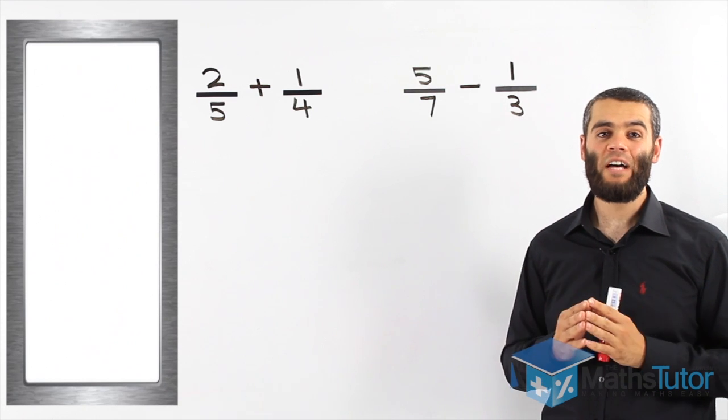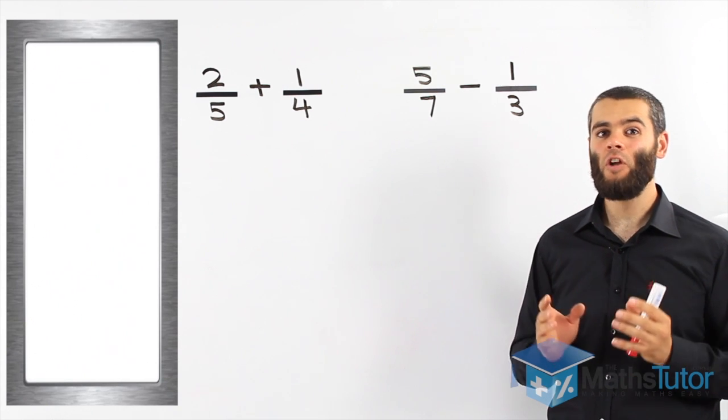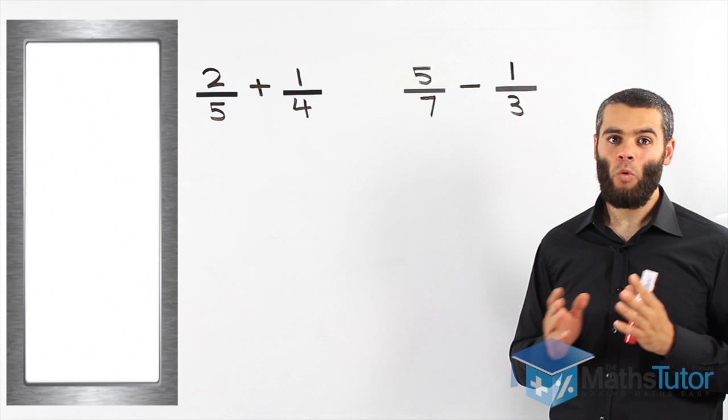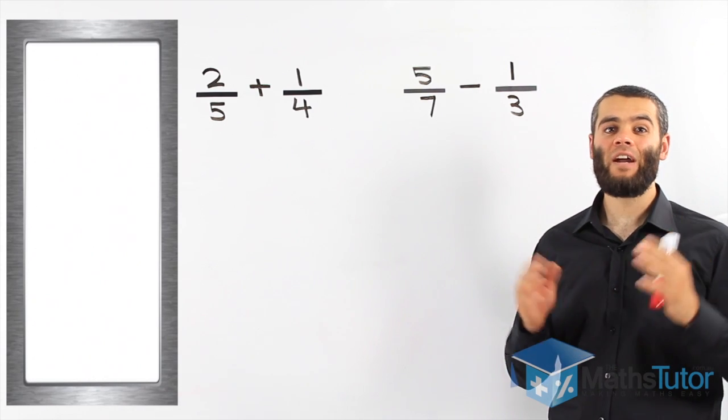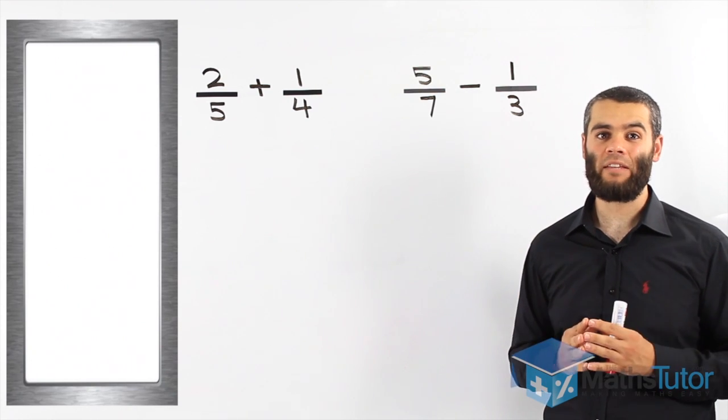In a previous lesson, we learned how to add and subtract fractions with common denominators, denominators that are the same. Well, what happens if we have fractions with different denominators? Does that mean we can't add or subtract them?